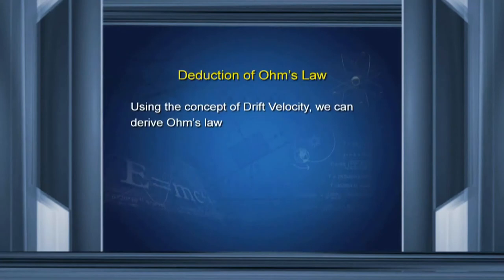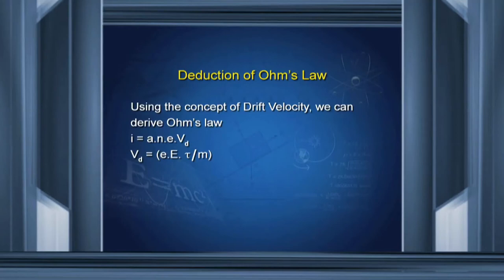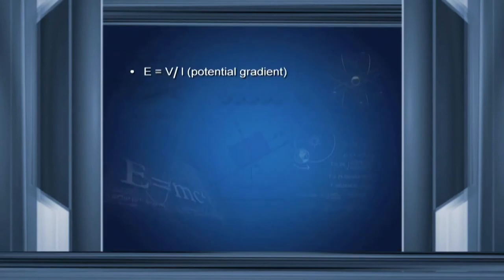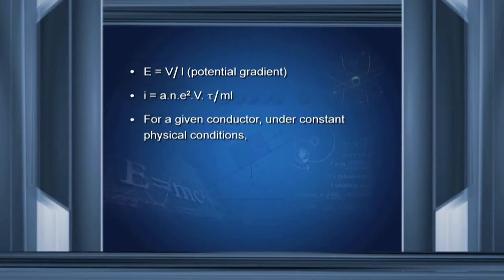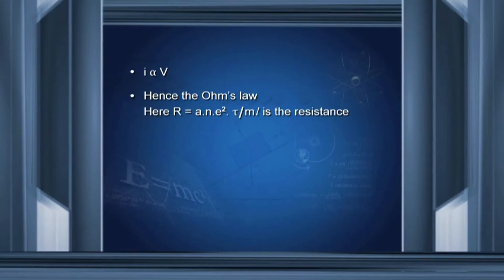Deduction of Ohm's law using drift velocity: as we know, i = ANevd and vd = eEτ/m. Substituting the value of vd, we get i = ANe²Eτ/m. Since E equals V/L (the potential gradient), substituting: i = ANe²Vτ/(mL). For a given conductor under constant physical conditions, ANe²τ/(mL) is constant. So i is directly proportional to V — this is Ohm's law. The constant ANe²τ/(mL) is referred to as the resistance R.